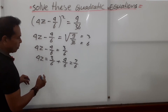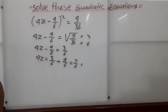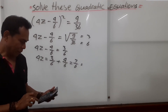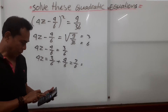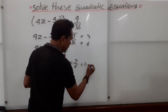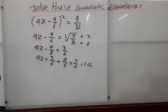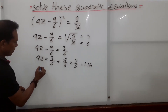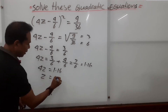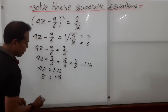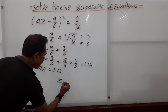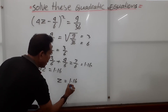Now, 7 over 6 is approximately 1.16. So 4z equals 1.16, which means z equals 1.16 over 4.